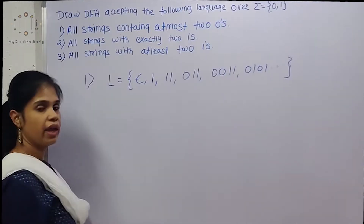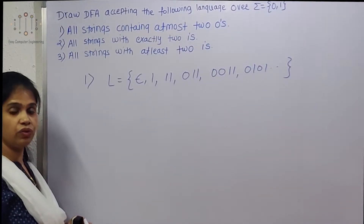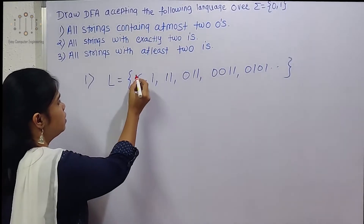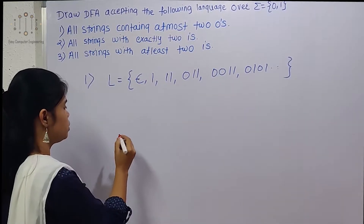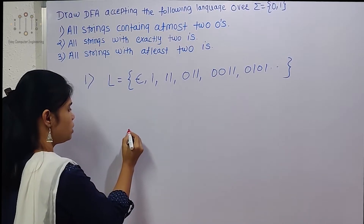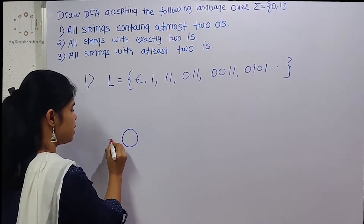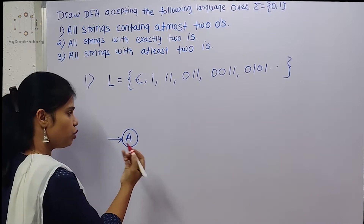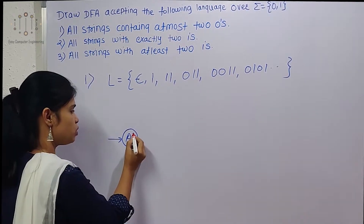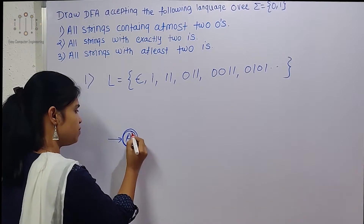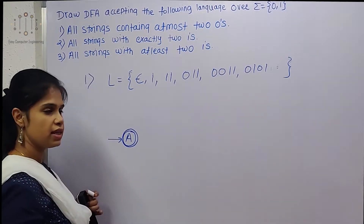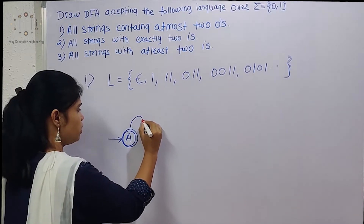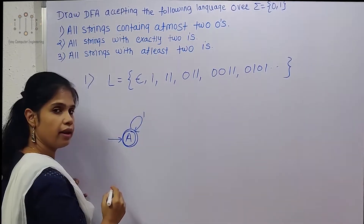So we can have strings with at most two zeros — that is the only condition. We start with an initial state A. Since the language includes epsilon, we will make state A a final state. There is no restriction on 1, so we will show a self-loop on 1 directly.